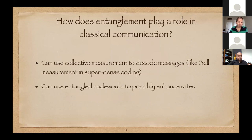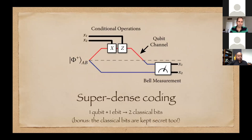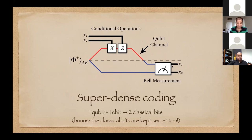How does entanglement play a role? We talked about using collective measurements to decode messages. Recall the Bell measurement from superdense coding: to figure out the bits transmitted, Bob had to do a joint measurement — a projection onto the Bell states. To do that in the lab, you would need a controlled-NOT quantum interaction and then measurements in the computational basis. You're doing a quantum computation and then product measurements to figure out the output. It's like there's entanglement in the decoder because a collective measurement involves a quantum computation that could produce entanglement.